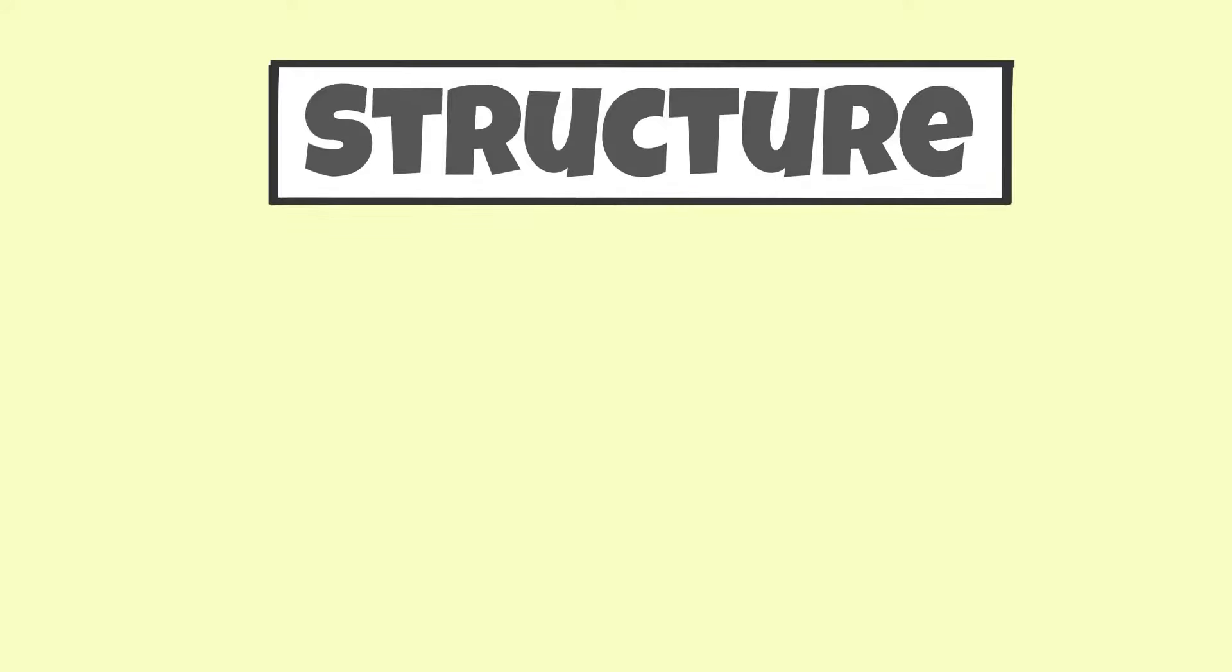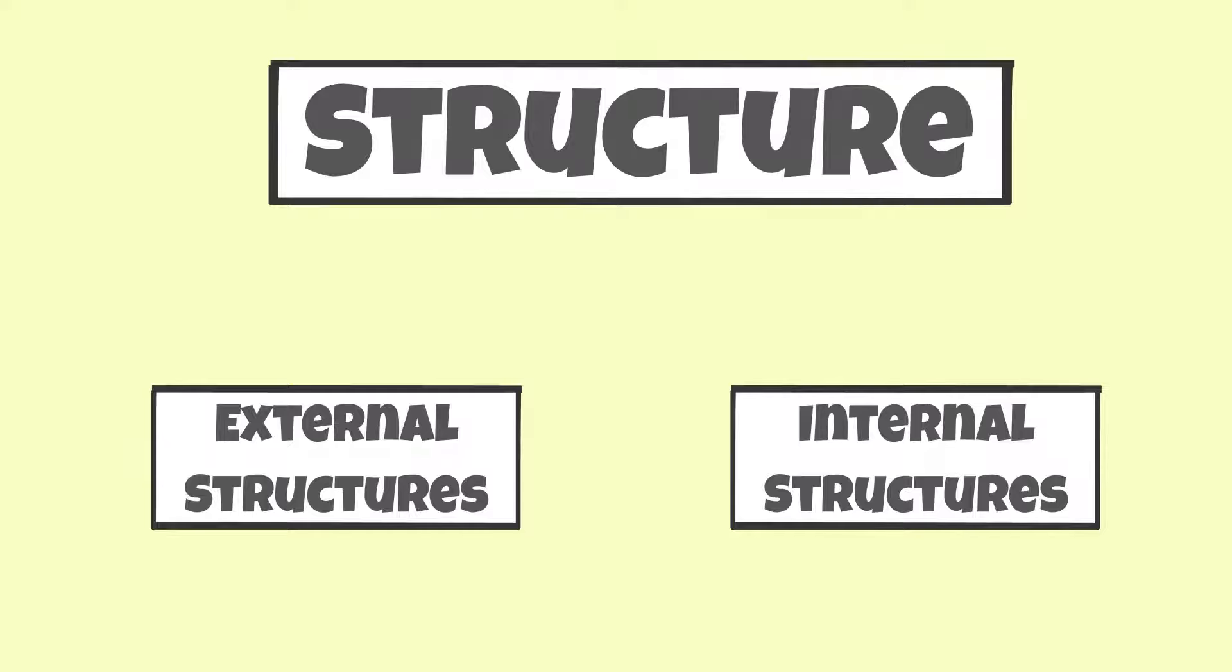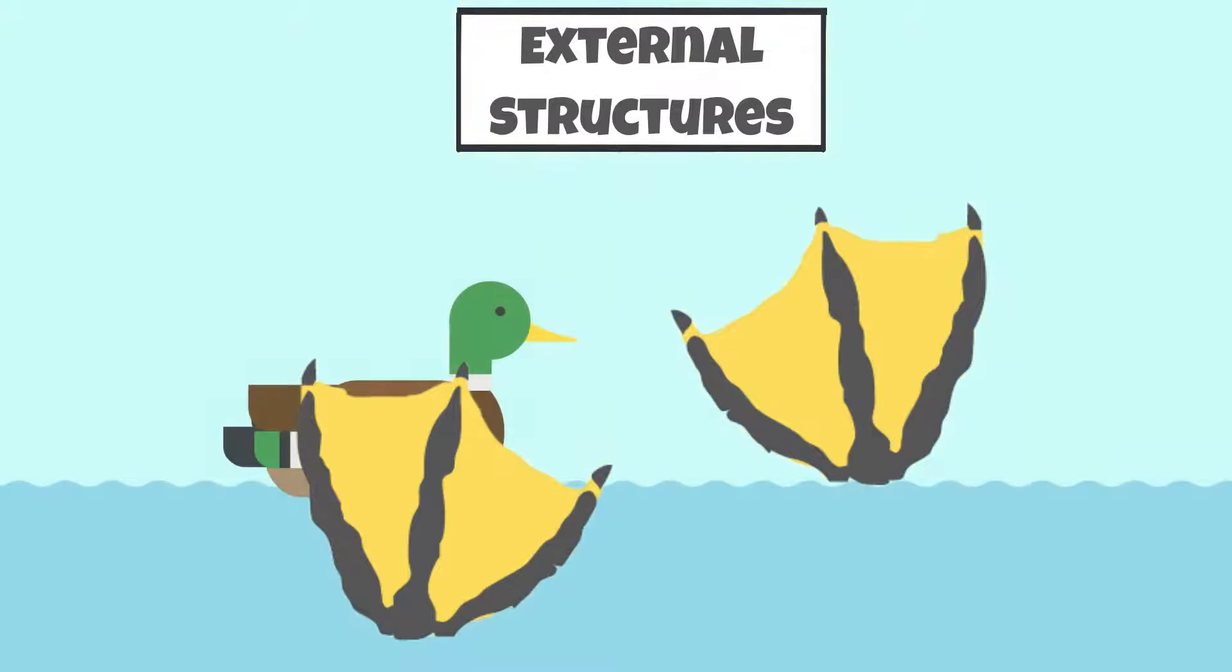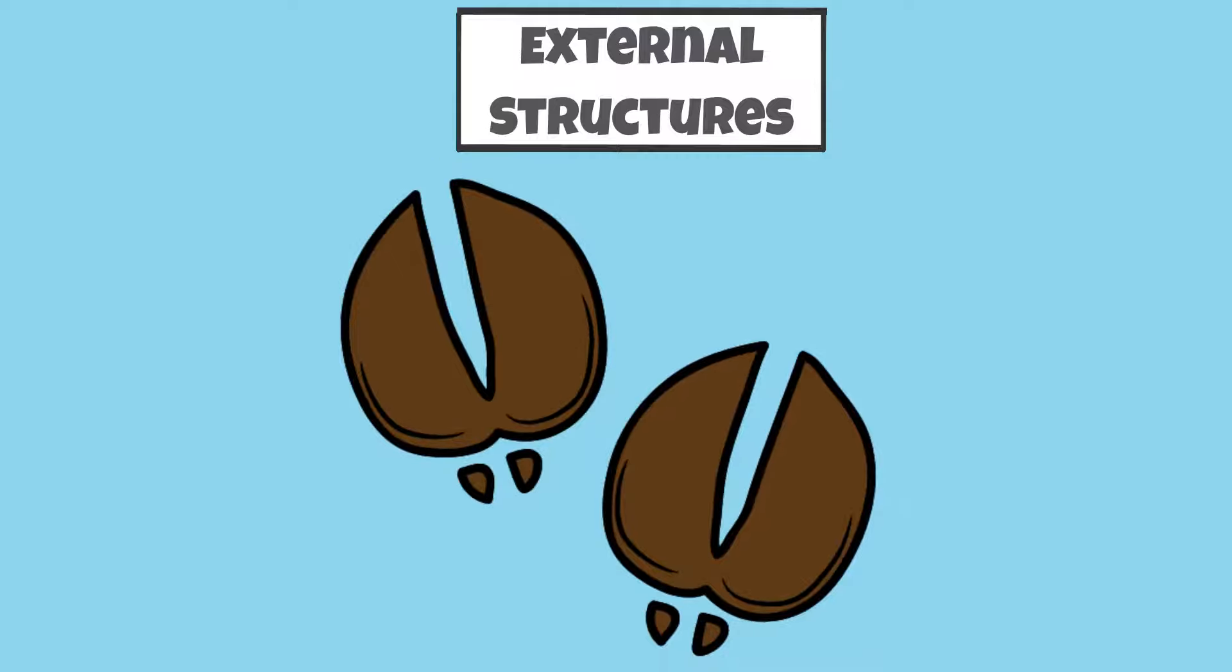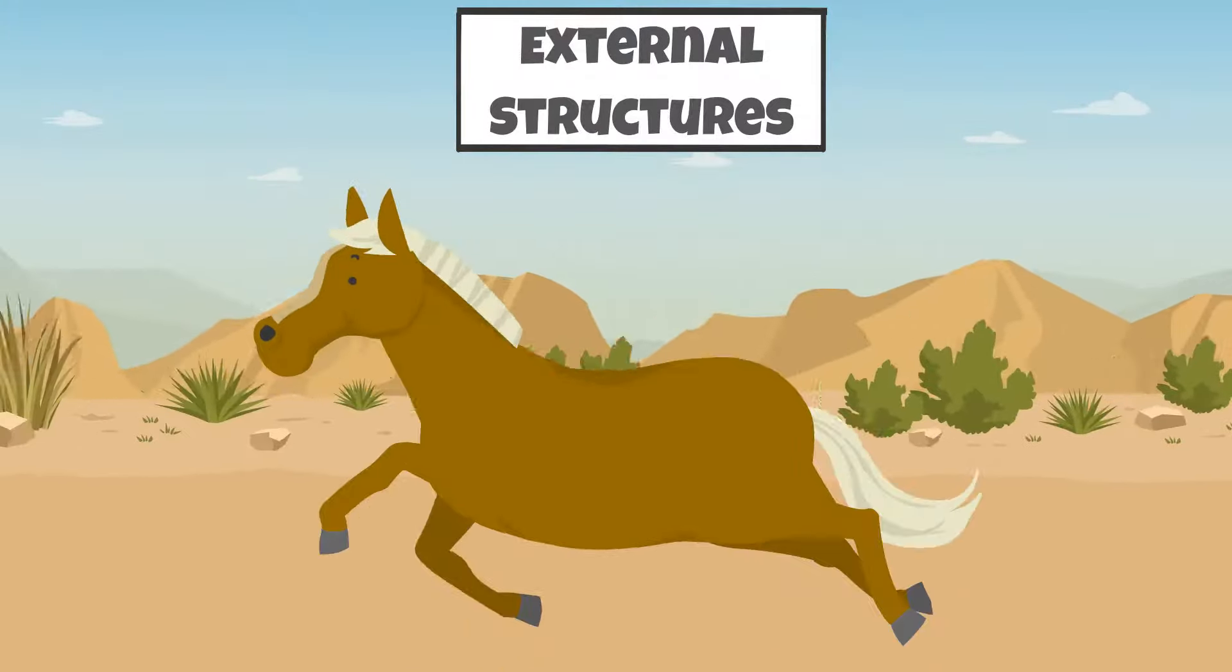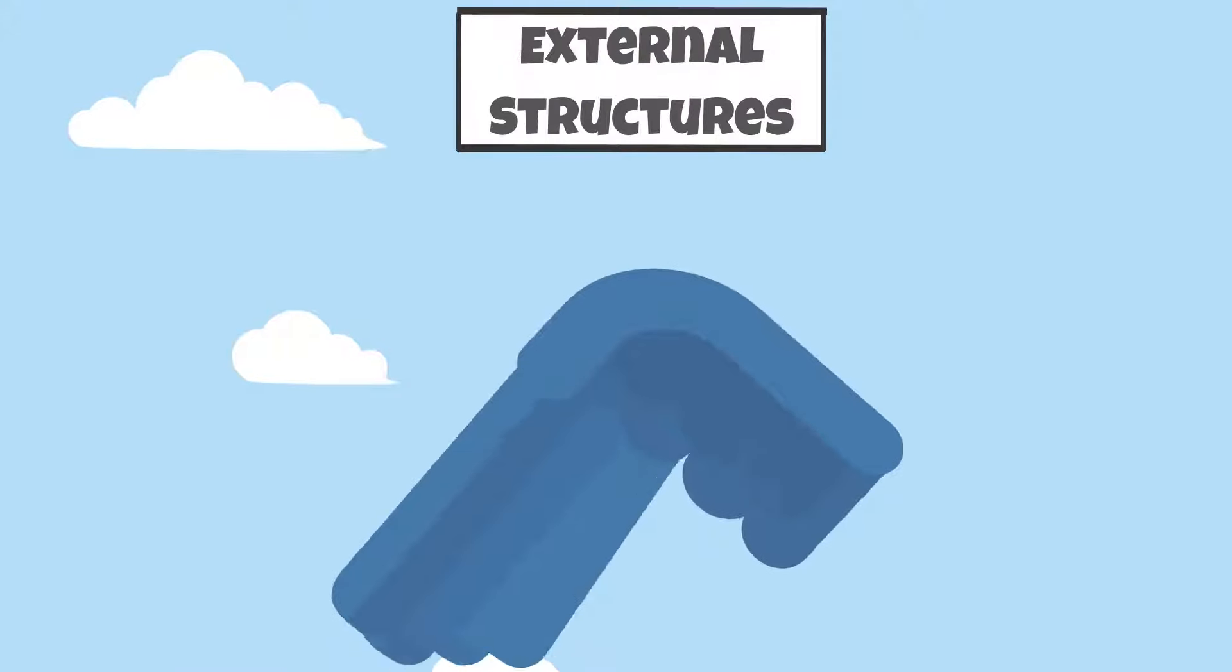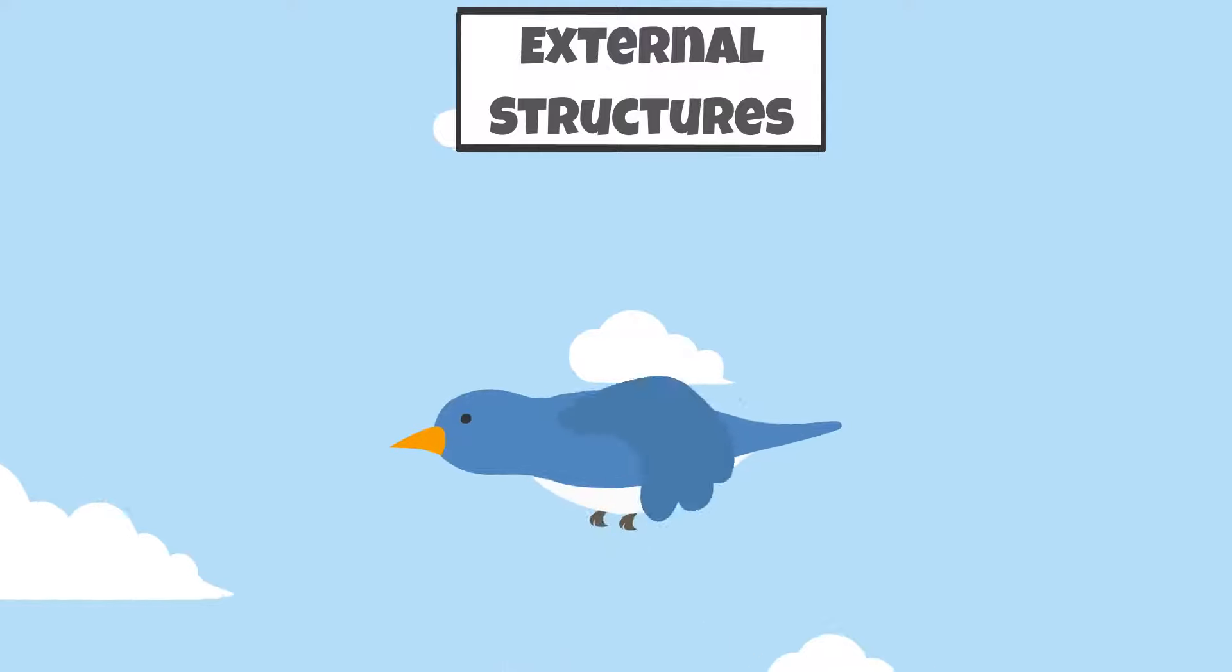Structures in plants and animals can be external or internal. An example of an external structure in an animal is webbed feet. Webbed feet help animals move faster in water. Another example is animal hooves. Hooves help animals move and run faster. Feathers are a structure that also helps birds stay warm in cold weather and fly.